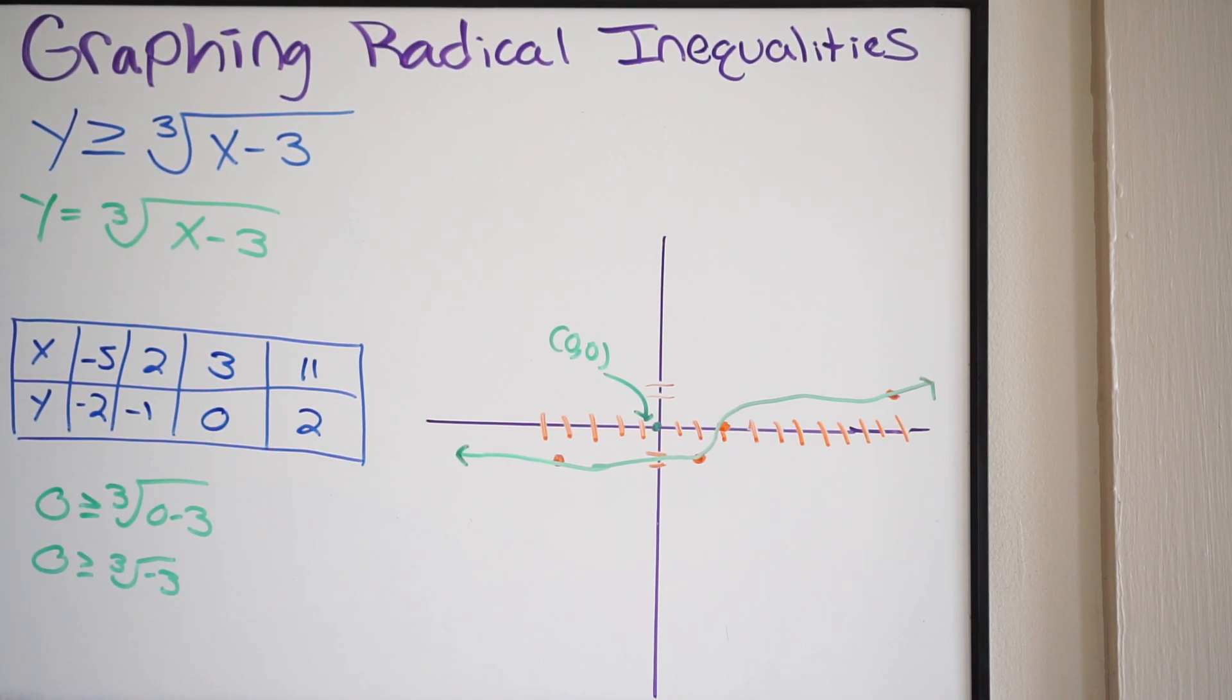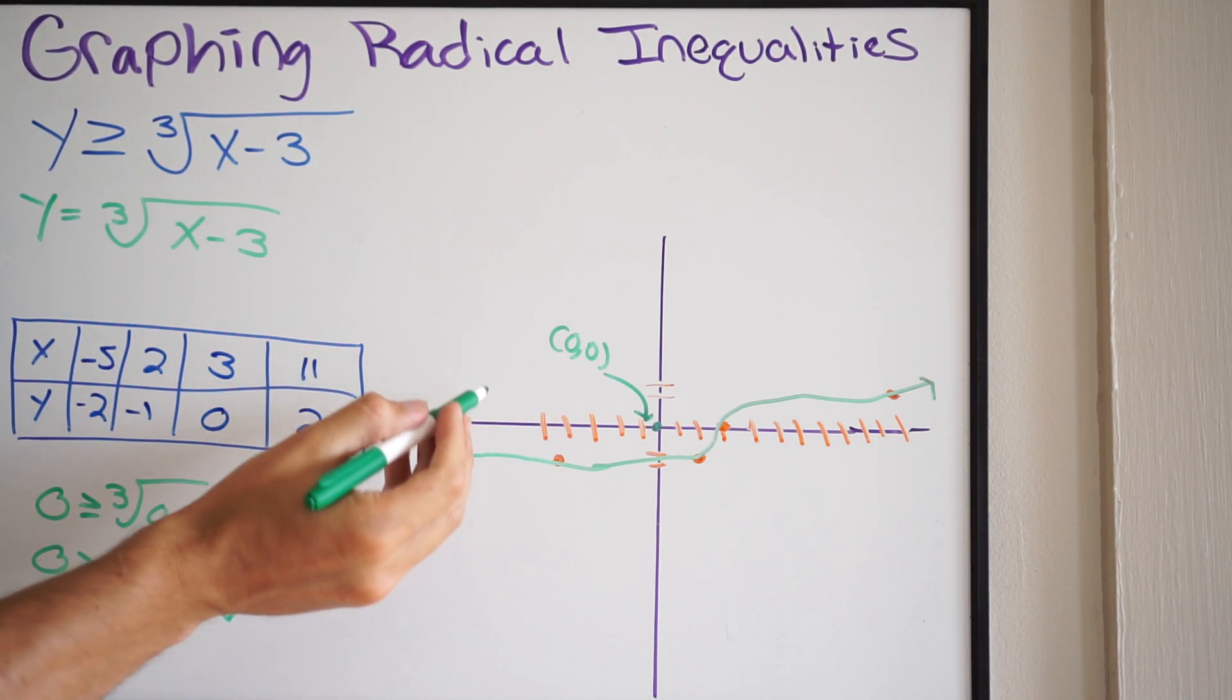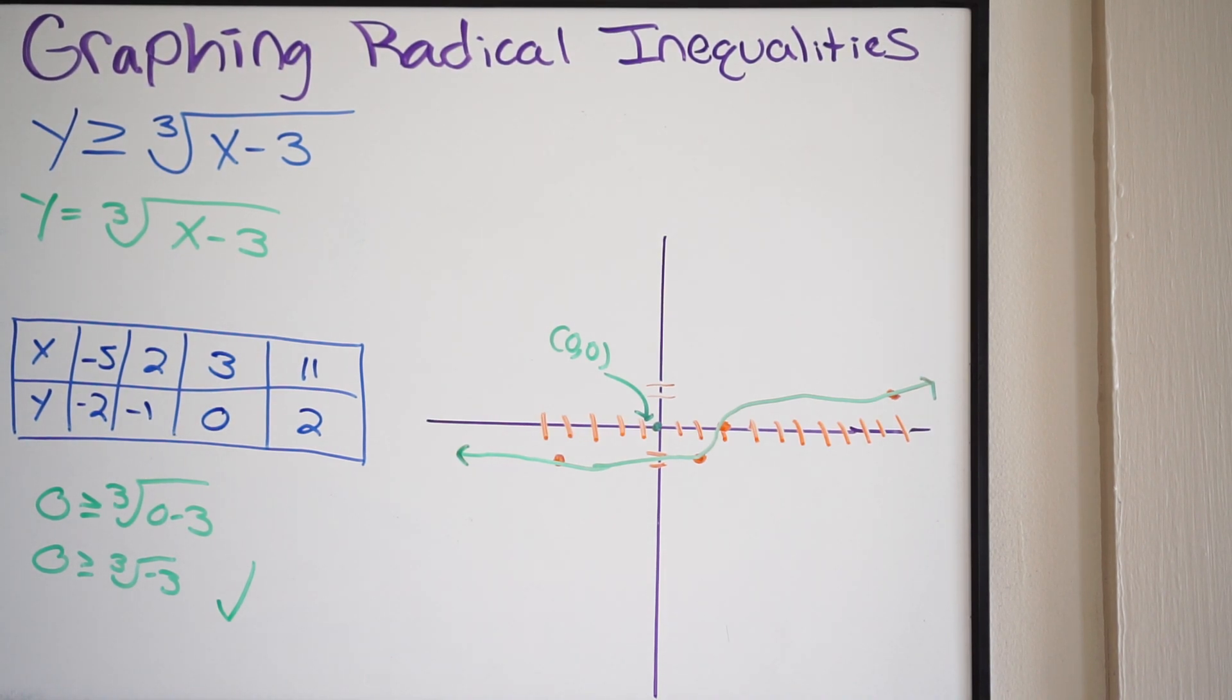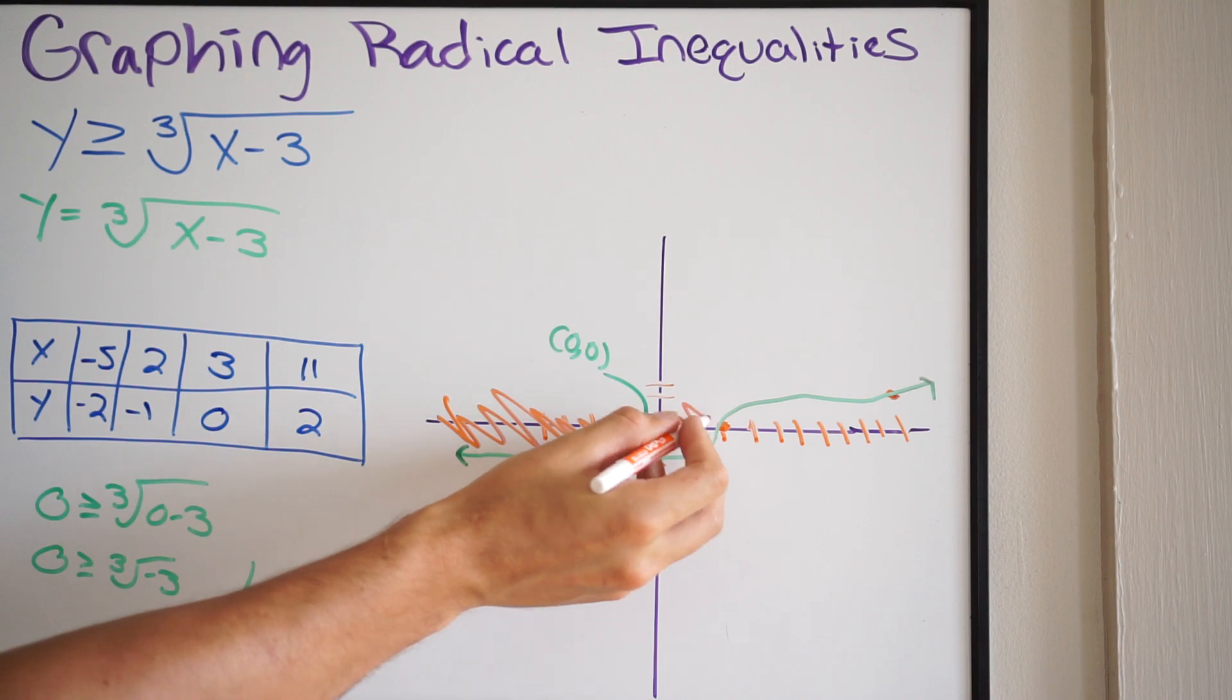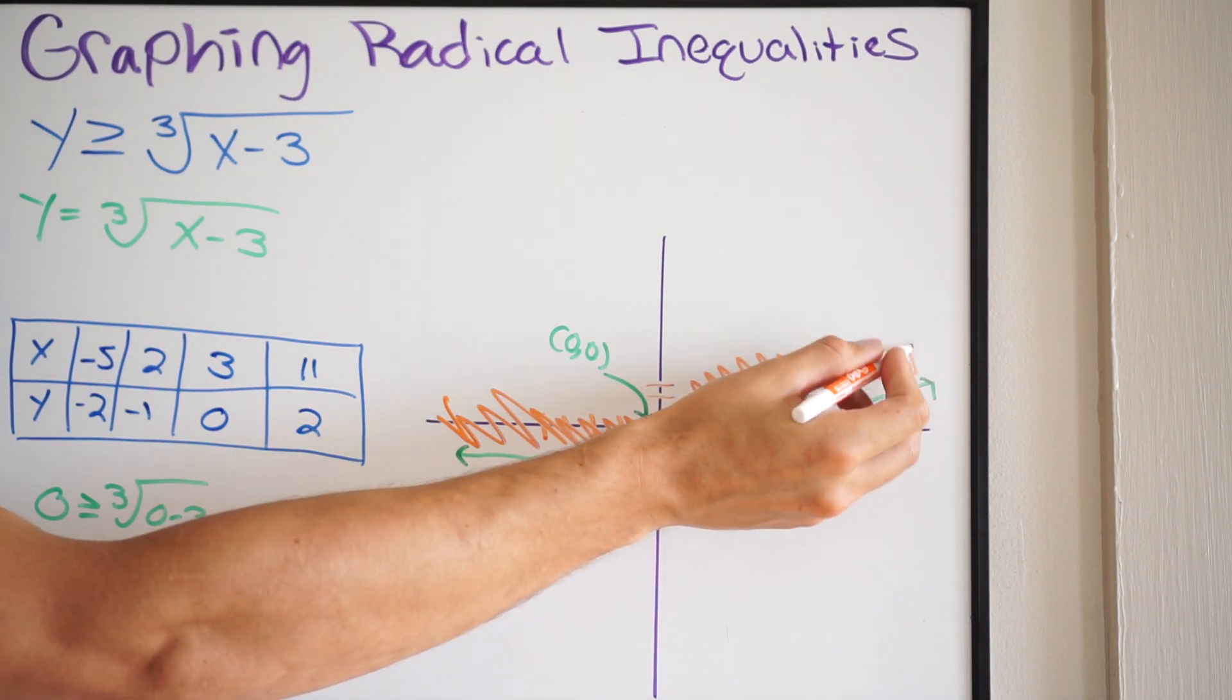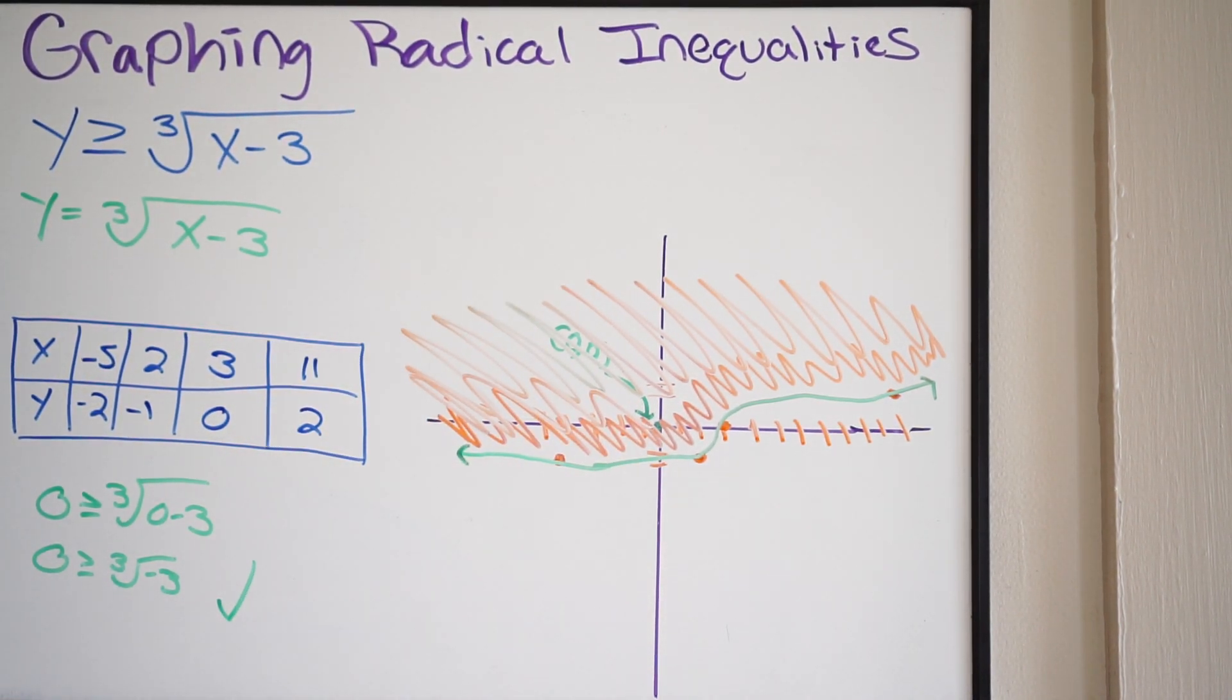And whatever this number is going to be here, we know that it's going to be less than 0, because it's the cube root of negative 3. It's going to return a negative number here. So we know that this is going to be true here. 0 is going to be greater than or equal to whatever this may be. So this checks out, meaning we picked above the line, it checked out. So that's the region we're going to shade. We're going to shade in that region. So that's all we're going to do here. So let's just do that in another color. So we're just going to shade all of this above. We have graphs. All right. And that is it. So that's how you go about graphing radical inequalities.